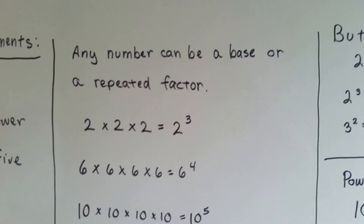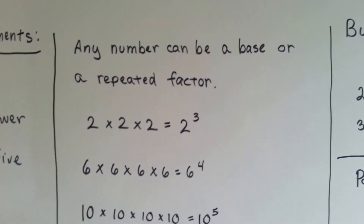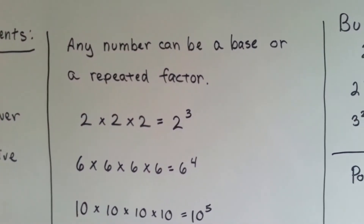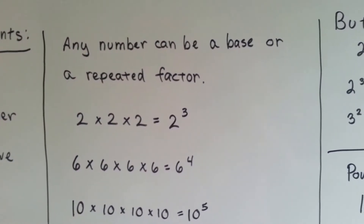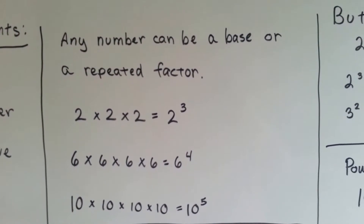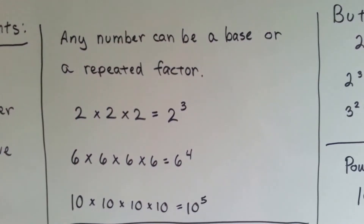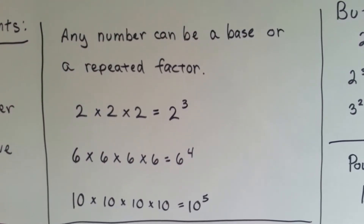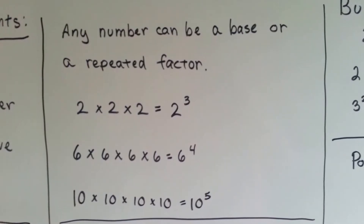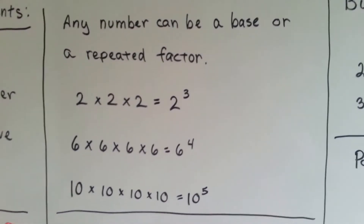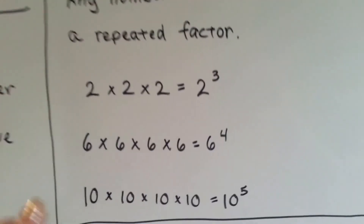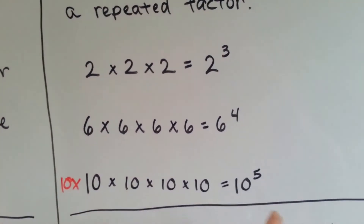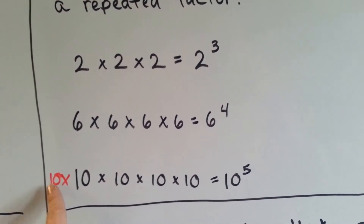Any number can be a base or a repeated factor. 2 times 2 times 2 can be 2 to the third power, or 2 cubed. 6 times 6 times 6 times 6 could be 6 to the fourth power. Or 10 times 10 times 10 times 10 times 10 — we're missing one, it should be times 10 — that can be 10 to the fifth power. It's supposed to be 5 of them: 1, 2, 3, 4, 5.